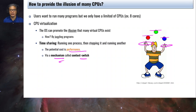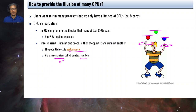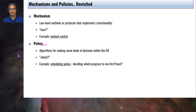Going back to the juggler example, the policy would be determining which ball to touch and which ball to release. The mechanism is juggling — that's the context switching. The policy would be which ball to catch and which to release. That's basically the analogy of mechanism and policy.